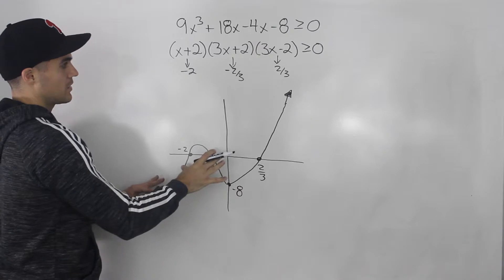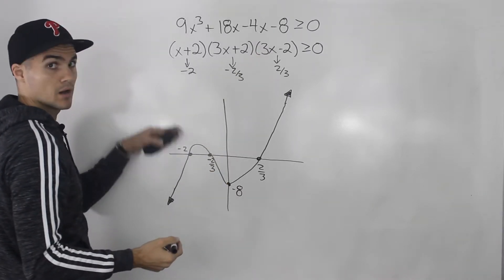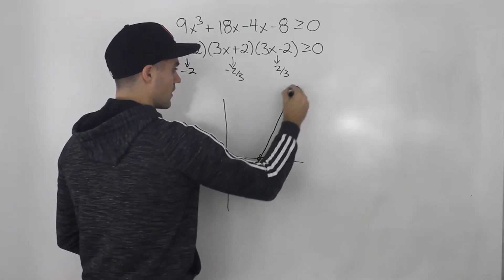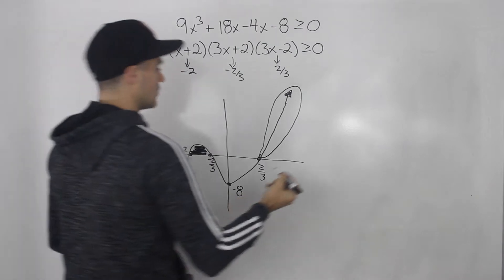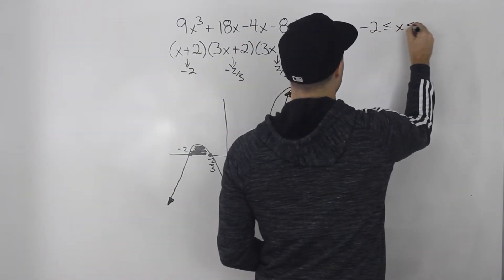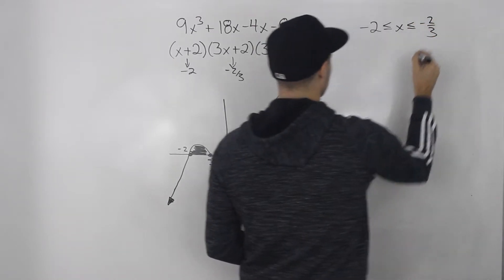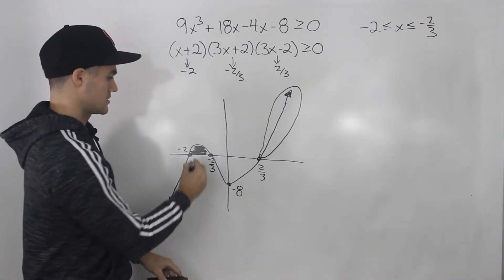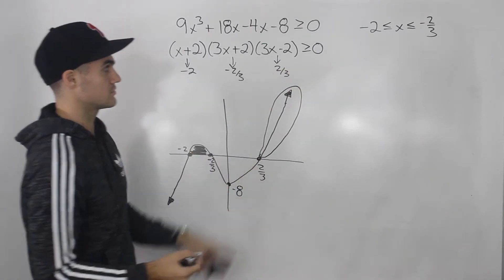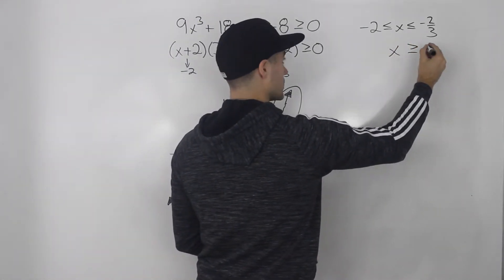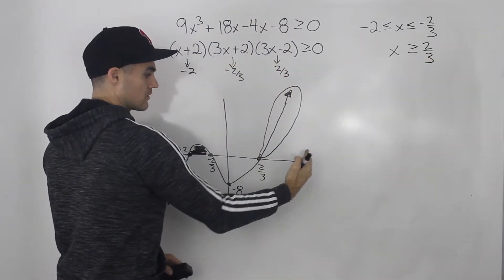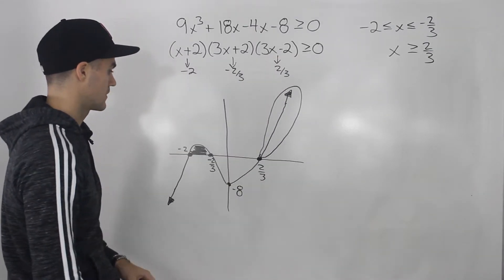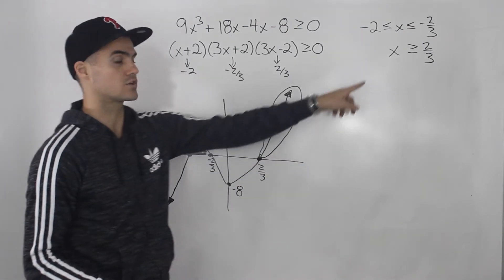So when is this polynomial greater than or equal to zero — when is it above the x-axis? Well, over here in this interval and over here as well. The solutions are: x is between or equal to negative two and negative two over three. We have to include negative two and negative two over three because it's greater than or equal to zero, so we include those y-values of zero. The other solution is when x is greater than or equal to two over three. In the remaining intervals, the function is negative. So those are your two answers from the graph.